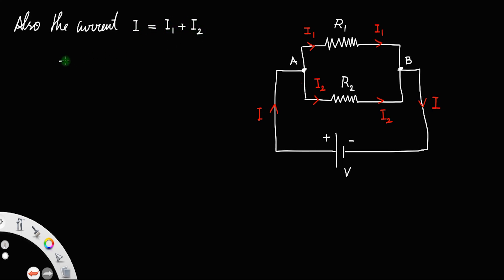That is I is equal to I1 plus I2. The voltage across this R1 equals V, also the voltage across R2 is also V, because both are connected between A and B. If they are connected between the same points the potential remains the same, or in any parallel connection the potential remains the same and is equal to the applied voltage V.